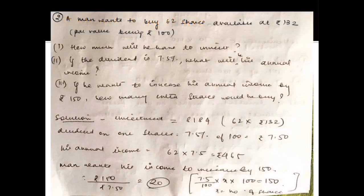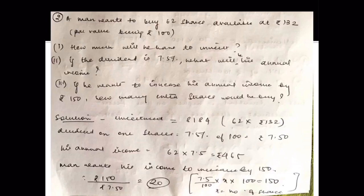Sum number 2: A man wants to buy 62 shares available at rupees 132. Par value, meaning face value, is rupees 100 but available at rupees 132 — that is at a premium of rupees 32. The total investment is 132 into 62, which gives rupees 8,184. If the dividend is 7.5 percent, the annual income is 7.5 upon 100 into 100 into 62, which gives rupees 465.